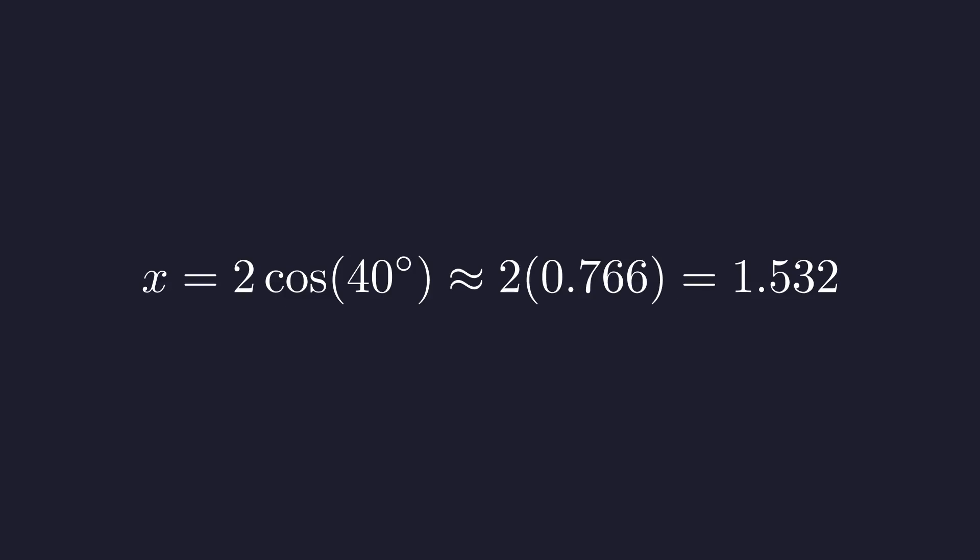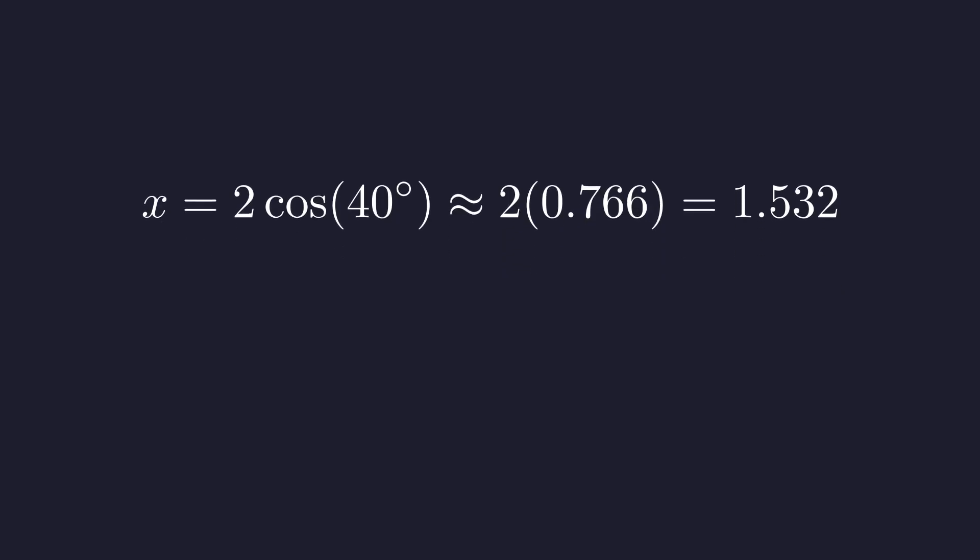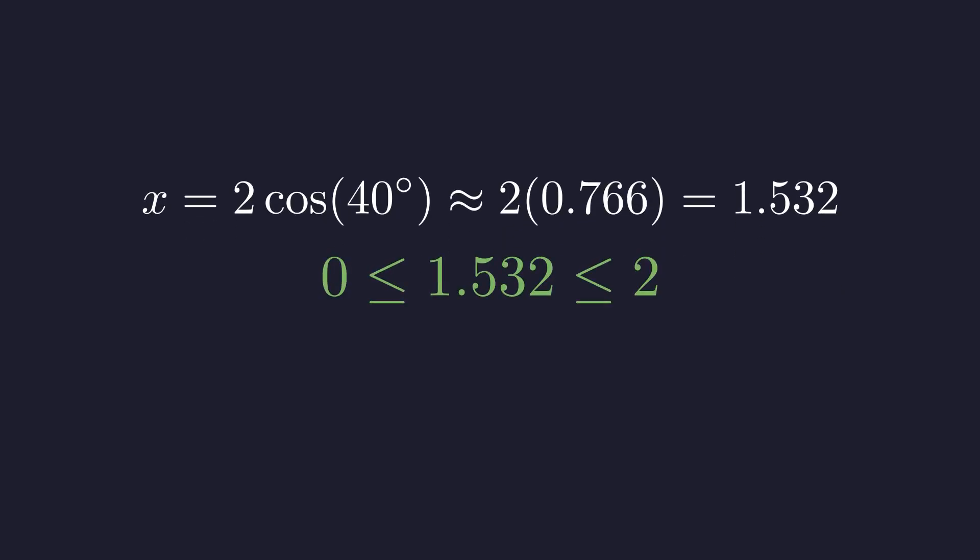2π over 9 radians is 40 degrees. The cosine of 40 degrees is approximately 0.766, making x about 1.532. This value sits comfortably within our required domain of 0 to 2.